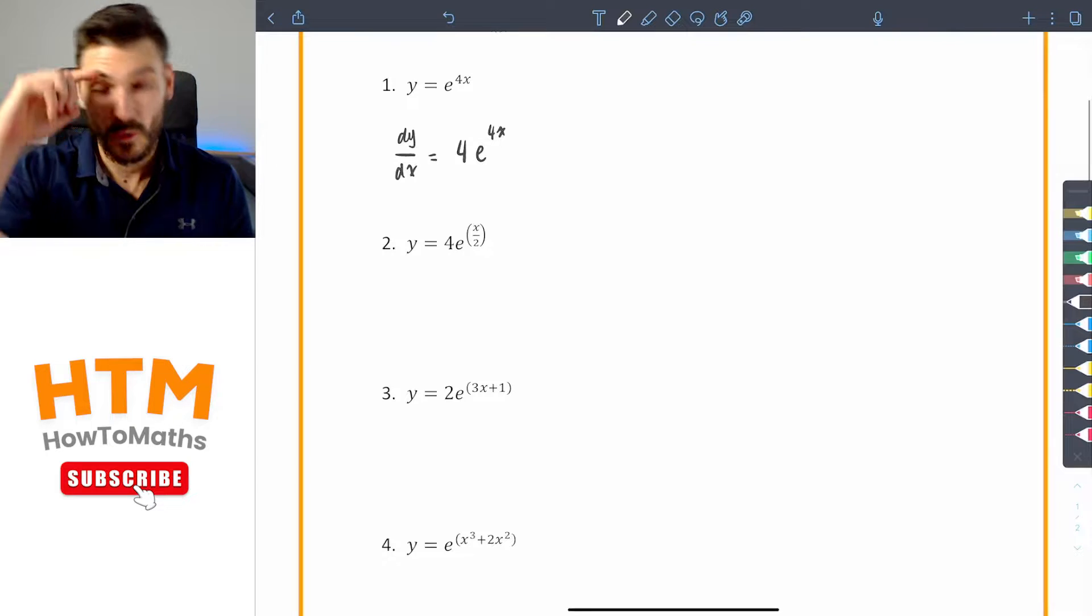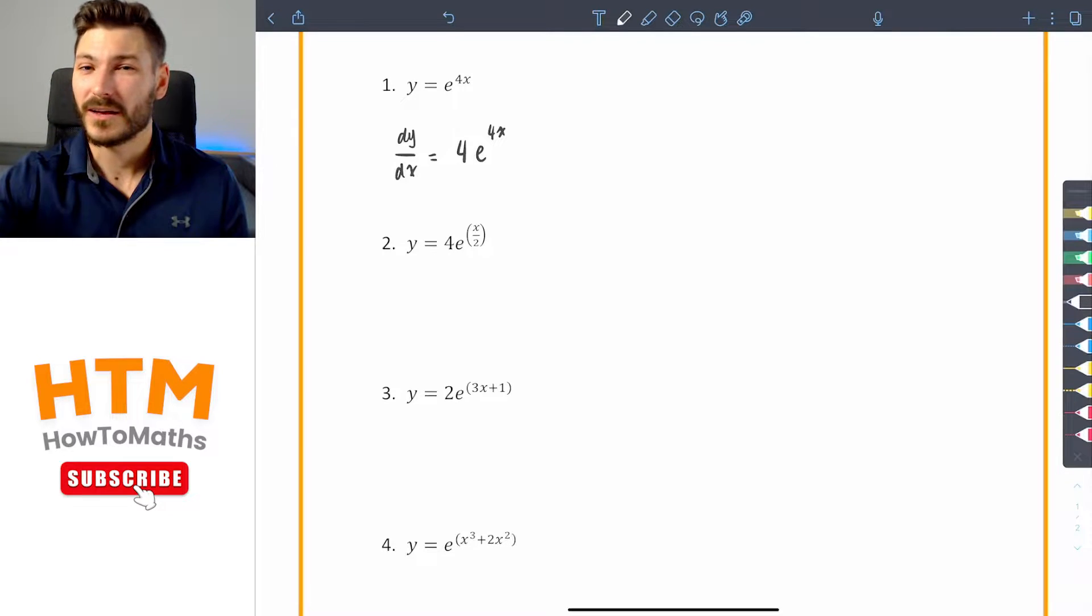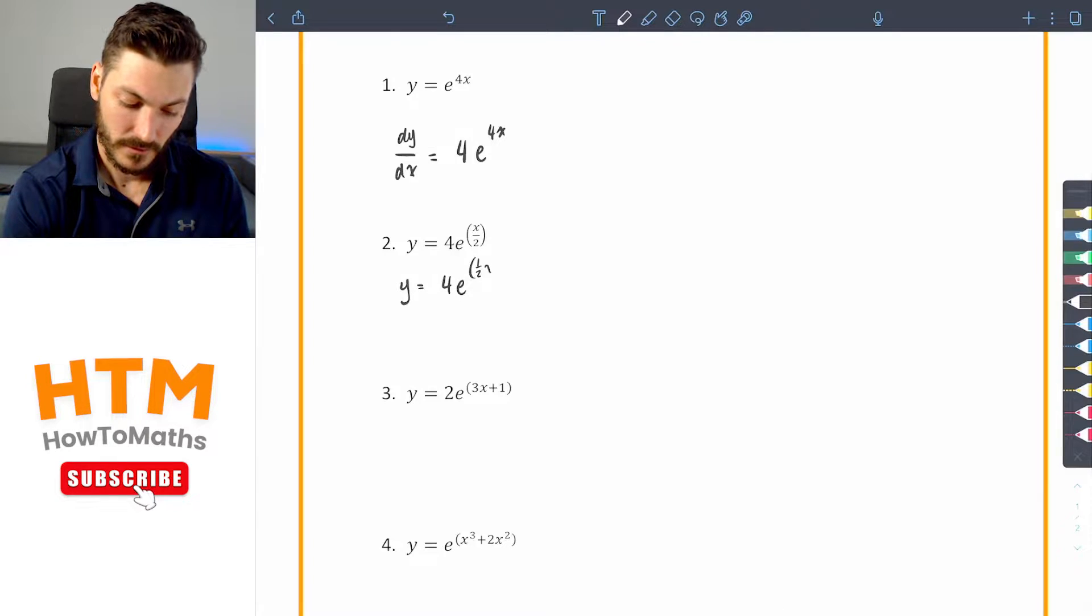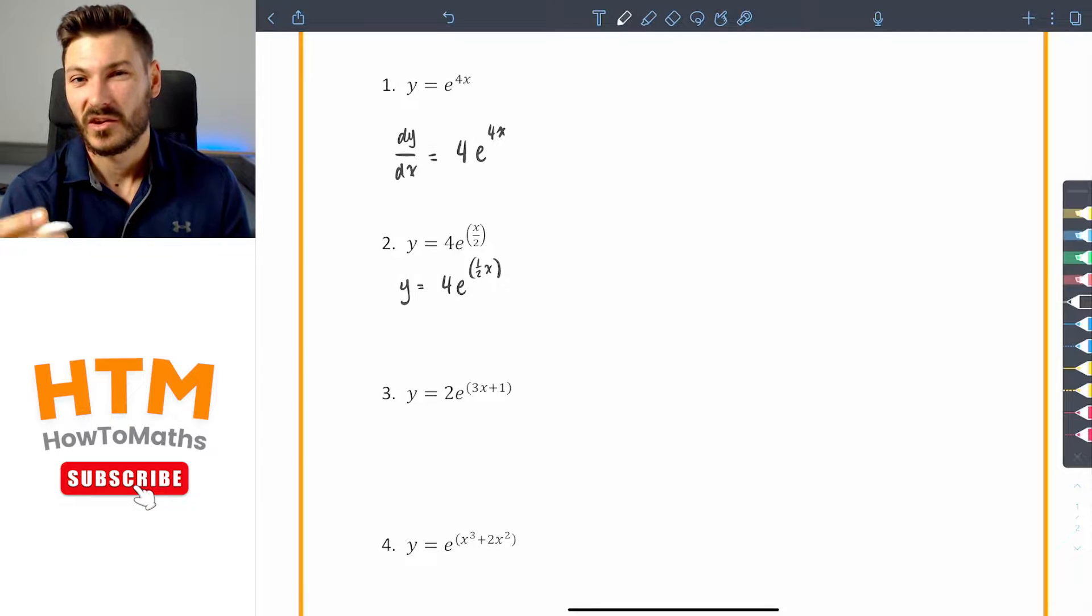Question two, we've got y equals 4e to the power of x on two. Slightly more tricky this one. First of all, I'm going to rewrite it as 4e to the power of one half of x. So you can see that the coefficient of x is just one half.